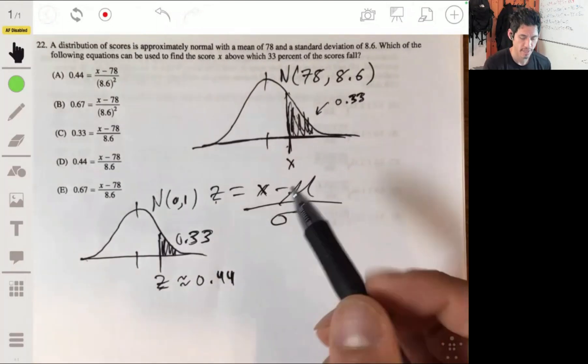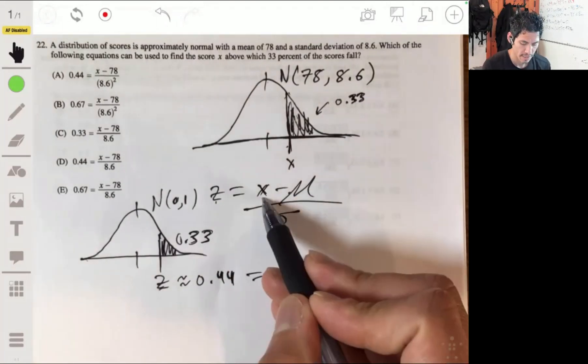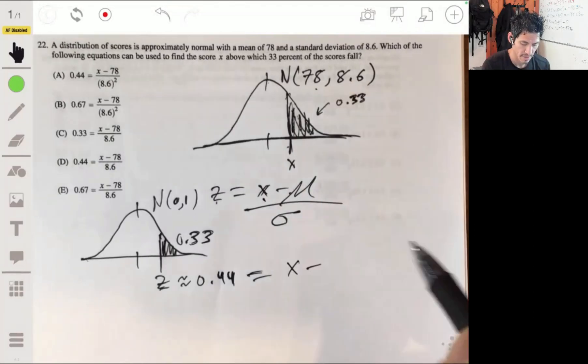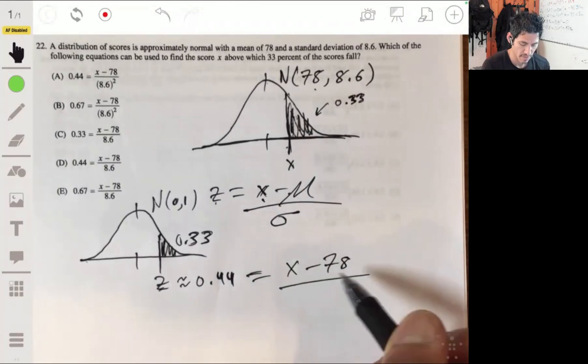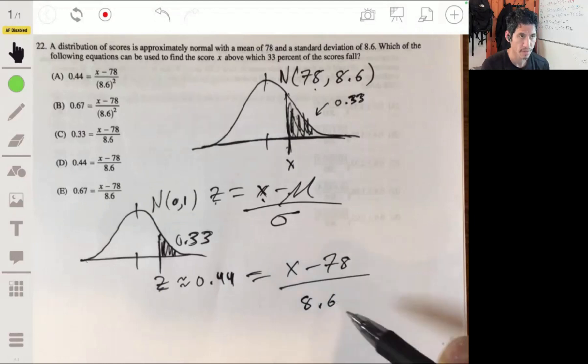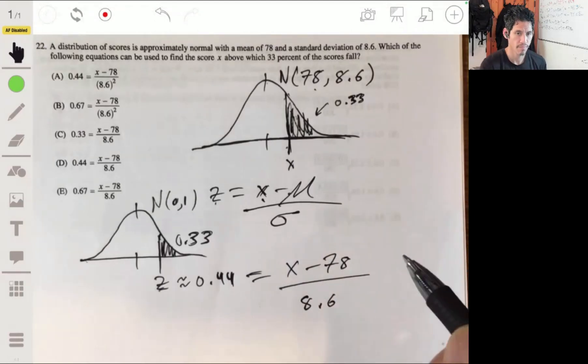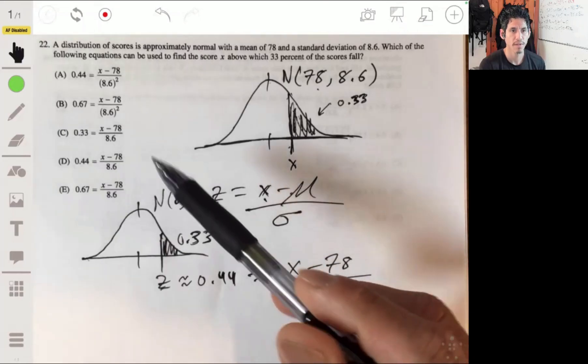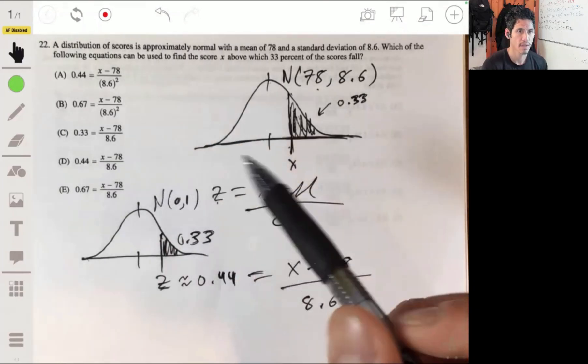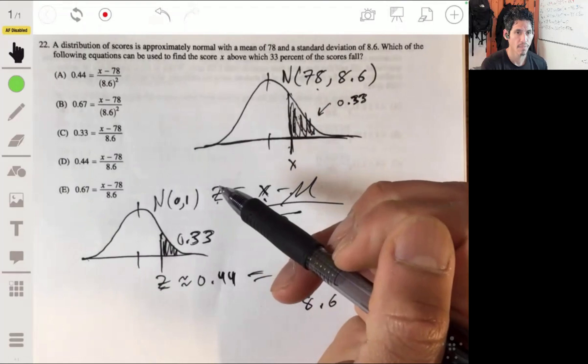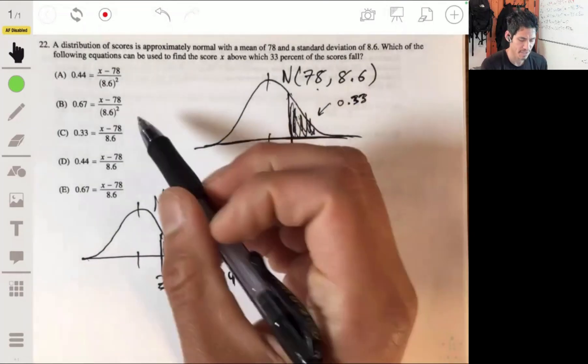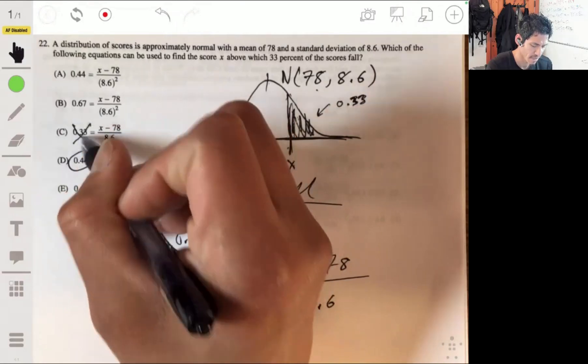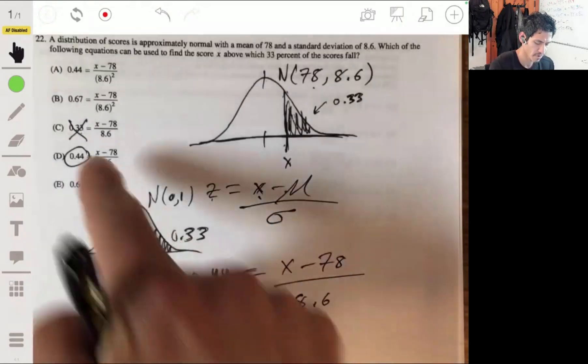So we're going to set 0.44 equal to x minus the mean 78 over the standard deviation of 8.6. So our answer will be C. Wait, not C. Yeah, it's not C because it's 0.44. Oops.